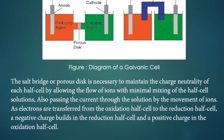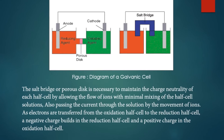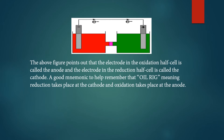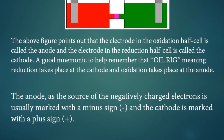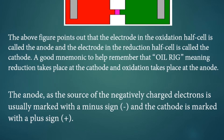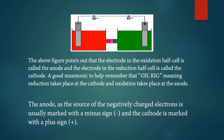As electrons are transferred from the oxidation half cell to the reduction half cell, a negative charge builds in the reduction half cell solution and a positive charge builds in the oxidation half cell solution. The electrode in the oxidation half cell is called the anode, and the electrode in the reduction half cell is called the cathode. Always remember: oxidation proceeds at the anode and reduction proceeds at the cathode. The anode, as the source of negatively charged electrons, is usually marked with a minus sign, and the cathode is marked with a plus sign.